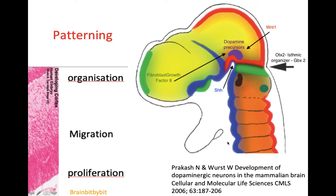Patterning means that each neuron in the neural tube has to know where it is and what it has to become. So the telencephalic neurons have to become cortex, whereas the hindbrain has to become brainstem and cerebellum, etc.